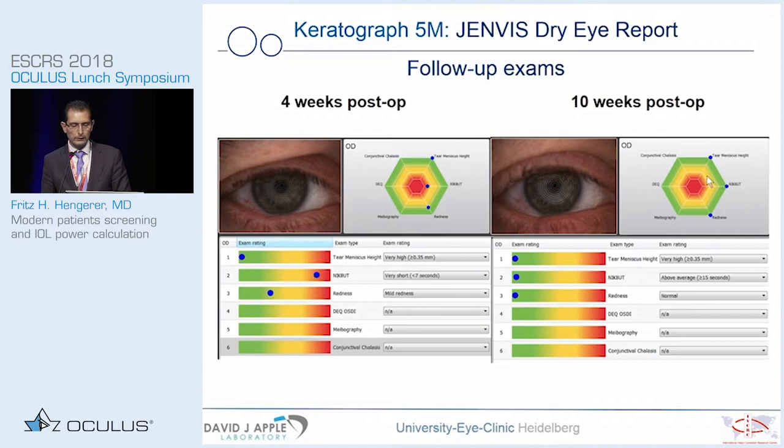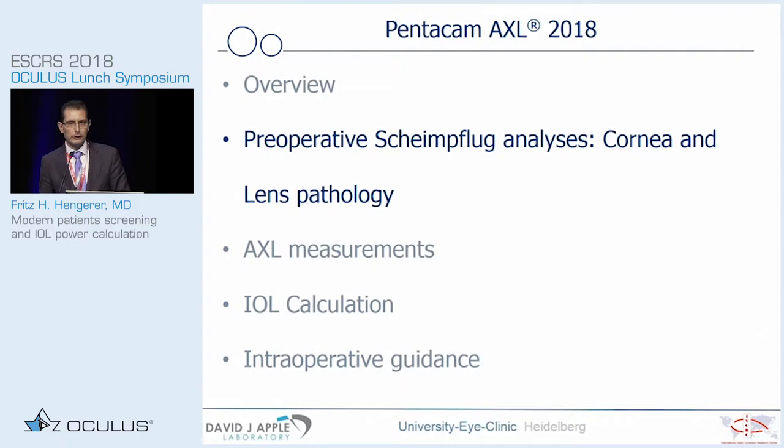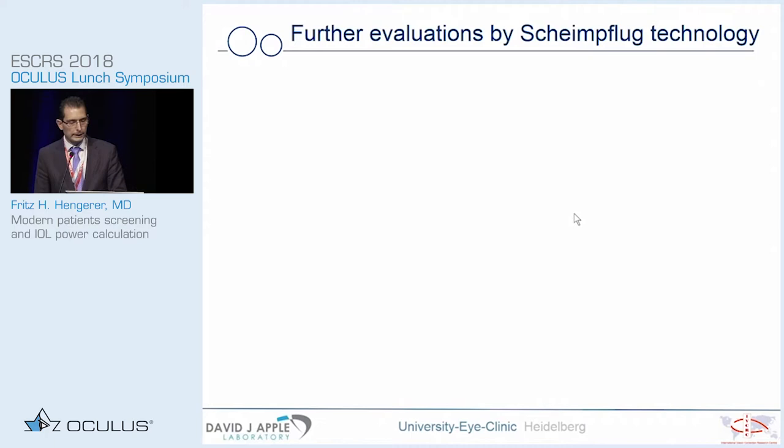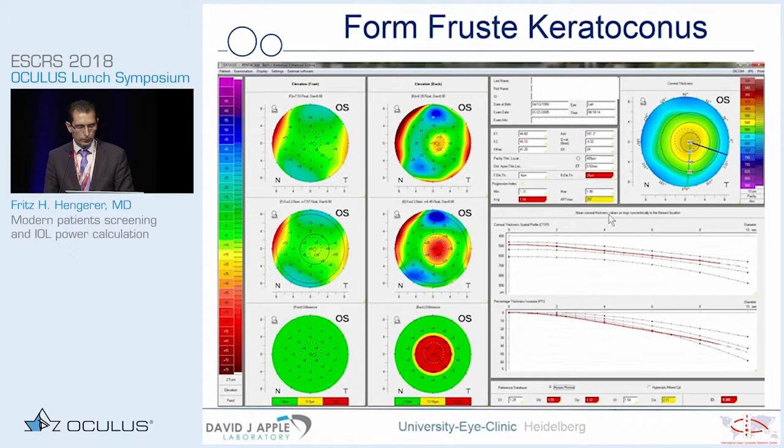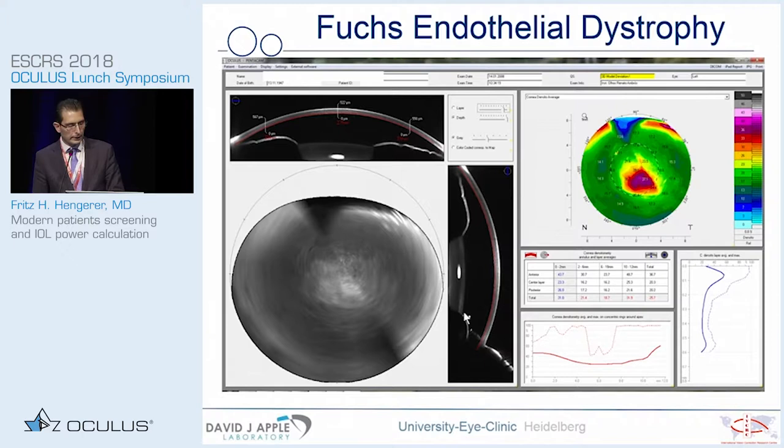Even four weeks after surgery, and up to ten weeks after surgery, we can expect a normal range in the anterior segment. Tear film stability and optical quality improves, as we showed last year at the same place in Lisbon. The preoperative Scheimpflug analysis includes corneal and lens pathology. To show some clinical data, we need to exclude first keratoconus from these eyes, and also posterior corneal surface abnormalities or Fuchs endothelial cell disease.